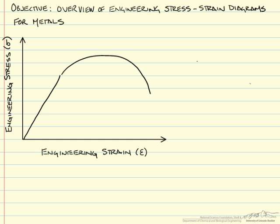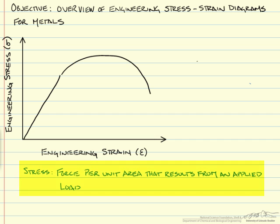Stress-strain diagrams allow us to plot the results from tensile tests and graphically identify important mechanical properties. As a reminder, stress is force per unit area that results from an applied load. These applied loads could be in tension, compression, shear, torsion, or any combination.